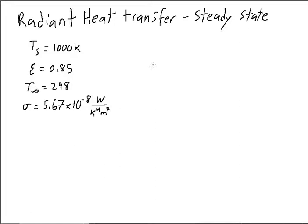If you just had a surface at 1000 Kelvin and it was surrounded by the atmosphere at 298 Kelvin, what would be the radiant heat transfer in kilowatts per meter squared coming from the surface and leaving?